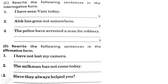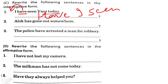Rewrite the following sentences in the interrogative form. Declarative sentences have been given to you and you need to change them into questions. For 'I have seen Vani today', simply pick up your helping verb, bring it forward and you get your question: 'Have I seen Vani today?' Similarly, 'Alok has gone out somewhere' becomes 'Has Alok gone out somewhere?'